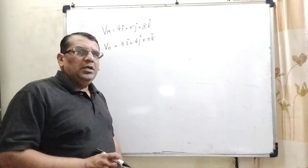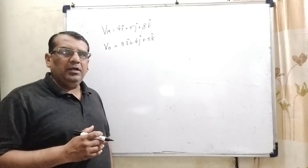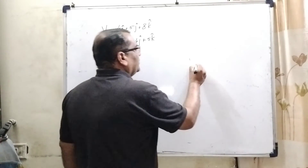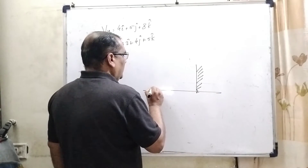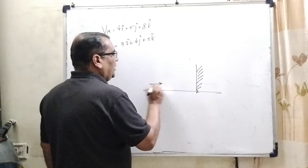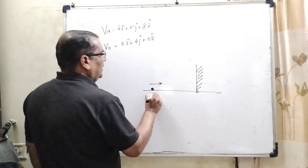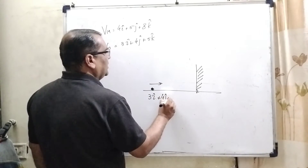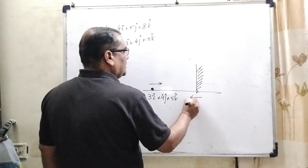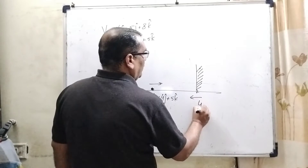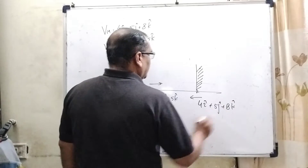This question is based on relative velocity. Here we consider the relative velocity between the mirror and object. We have a mirror, and in front of this mirror an object is kept. This object is moving towards the mirror with velocity 3i-cap plus 4j-cap plus 5k-cap, and this mirror is moving towards the object with velocity 4i-cap plus 5j-cap plus 8k-cap.